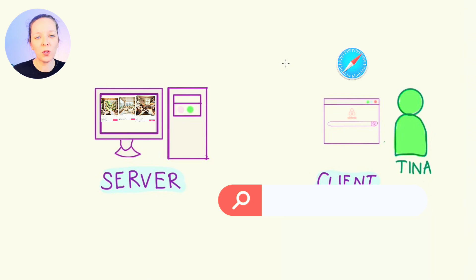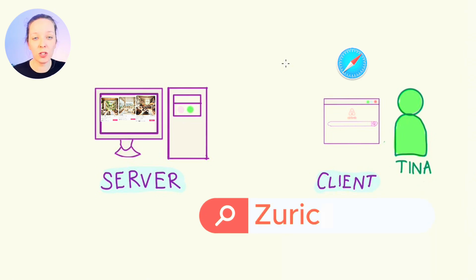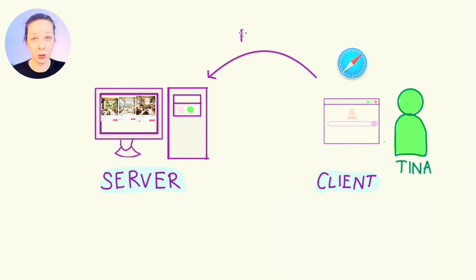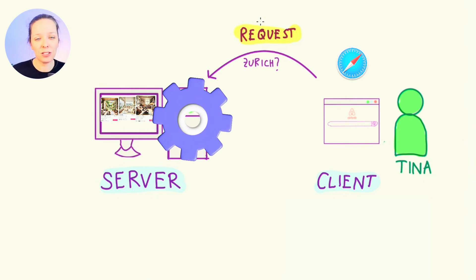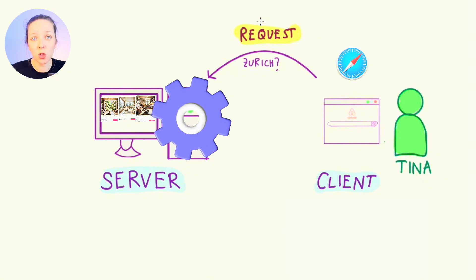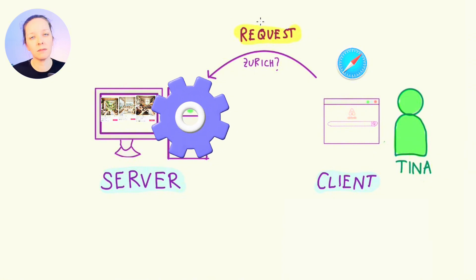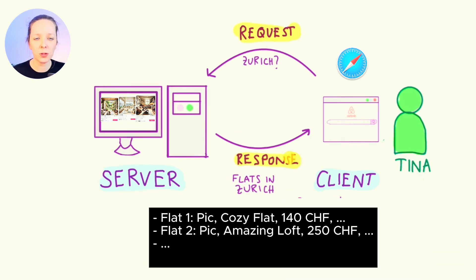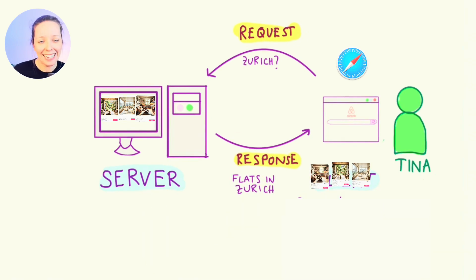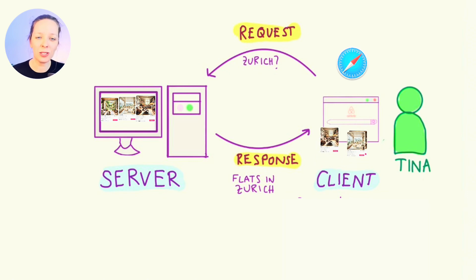First, on Airbnb she searches for Zurich and hits enter. Now the client sends a request to the server. The browser essentially asks: show me the flats available in Zurich. The server processes the request — it searches its database and finds all apartments in Zurich. Then the server sends back a response: it delivers a list of flats, complete with photos, descriptions and prices. The client then displays these results to Tina.